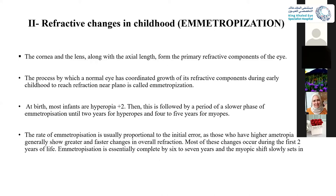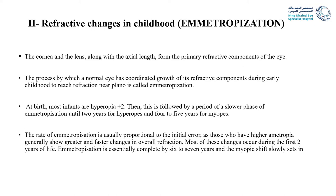At birth, most infants are hyperopic, around plus two, followed by a period of slower emetropization until two years. Then at four to five years, there is a slight shift toward myopia. The rate of emetropization is usually proportional to the initial error. Those patients with higher hyperopia show greater and faster change in overall refraction. Most of this change occurs during the first year, and emetropization is initially completely finished by the sixth to seventh year with the myopic shift.